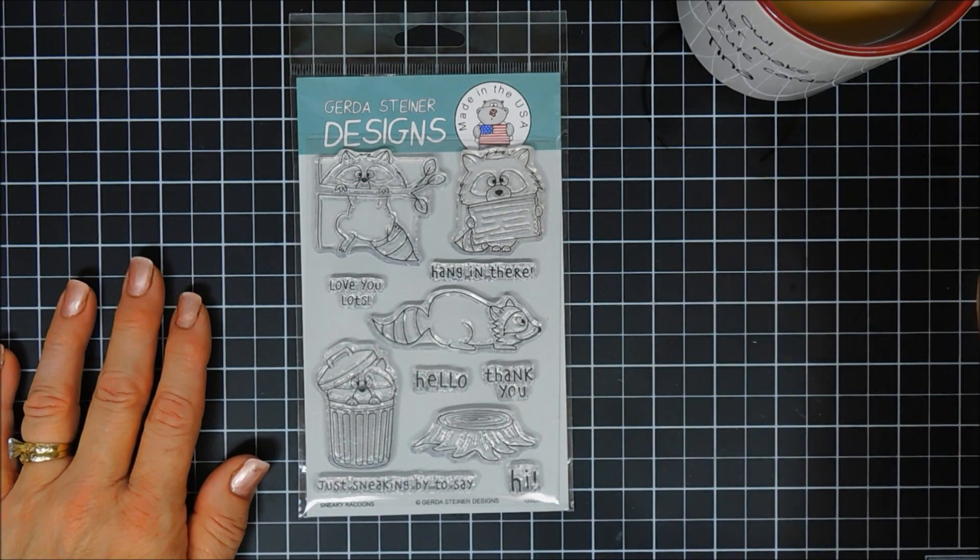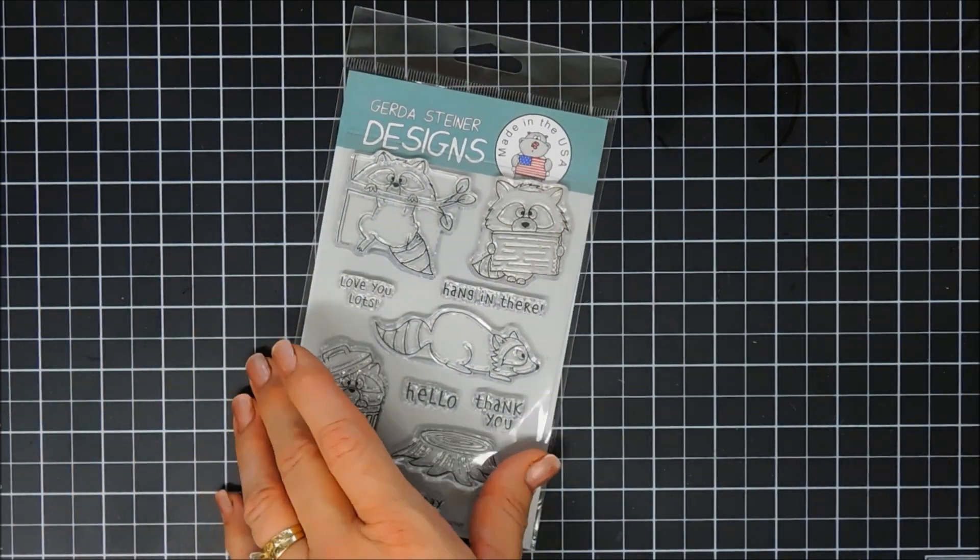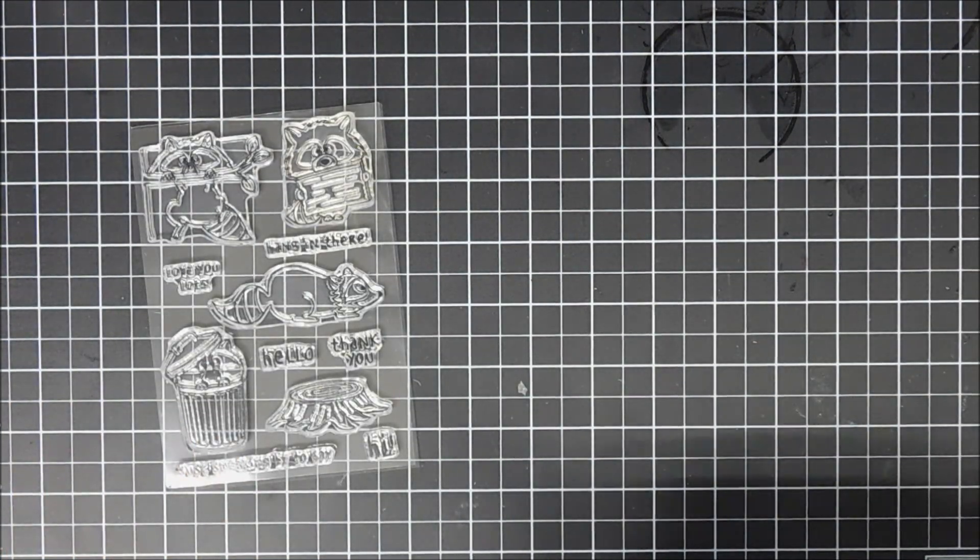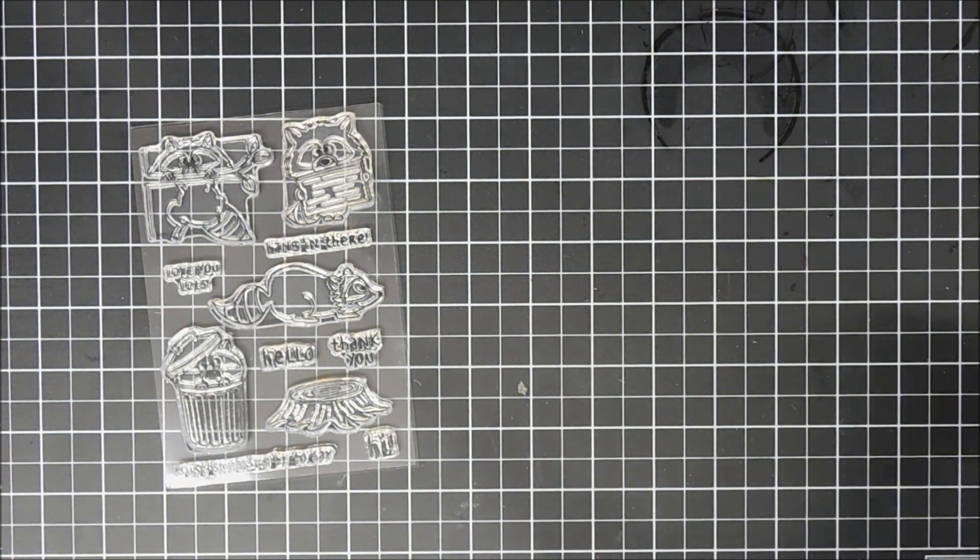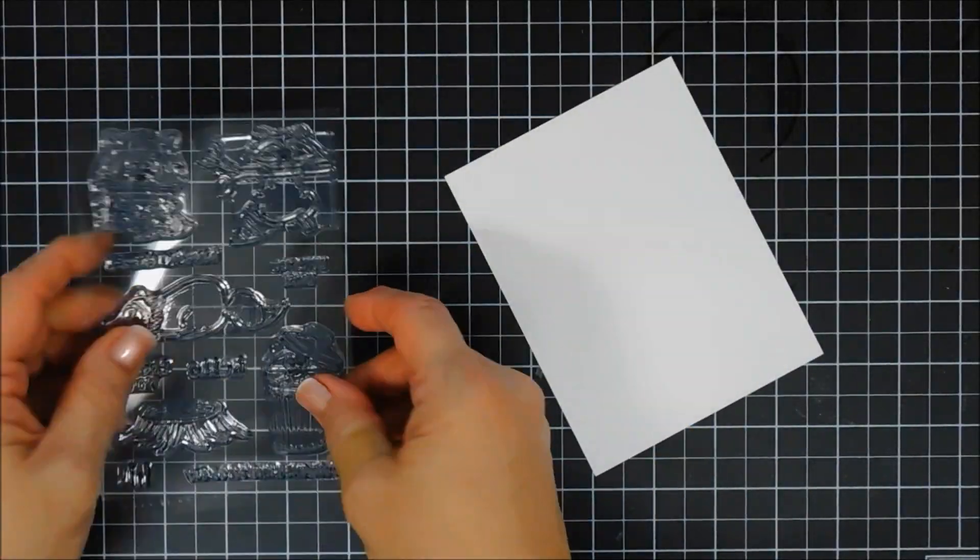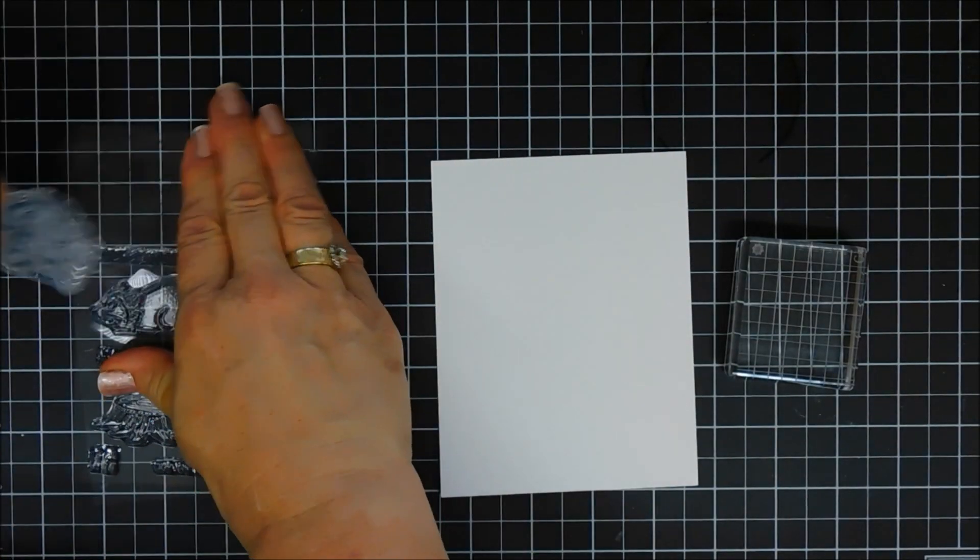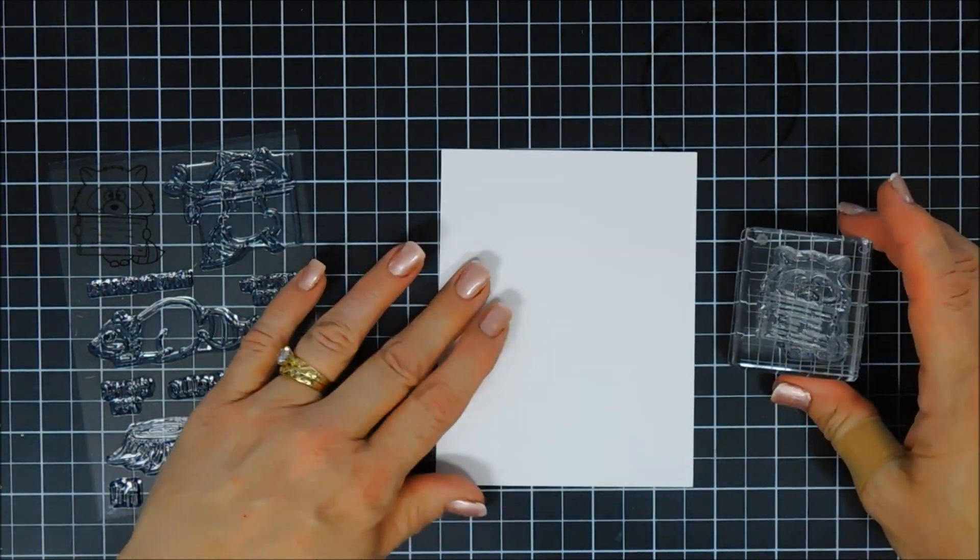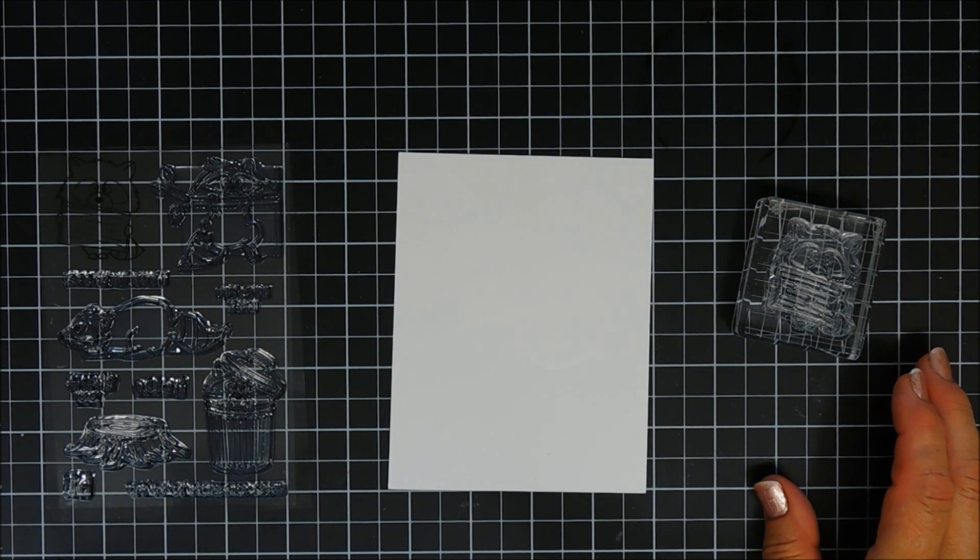We're going to jump in and do some stamping. This here is called the Sneaky Raccoons stamp set, and again it'll be available in the Gerda Steiner shop on August 30th in case you guys want to check it out. It has four cute little raccoons that coordinate with the sentiments beautifully, and then the sentiments are buildable too, which is great. There's a main sentiment that says 'just sneaking by to say' and then you can add the sentiment that says 'love you lots,' 'hello,' 'thank you,' or 'hi,' or even 'hang in there.'